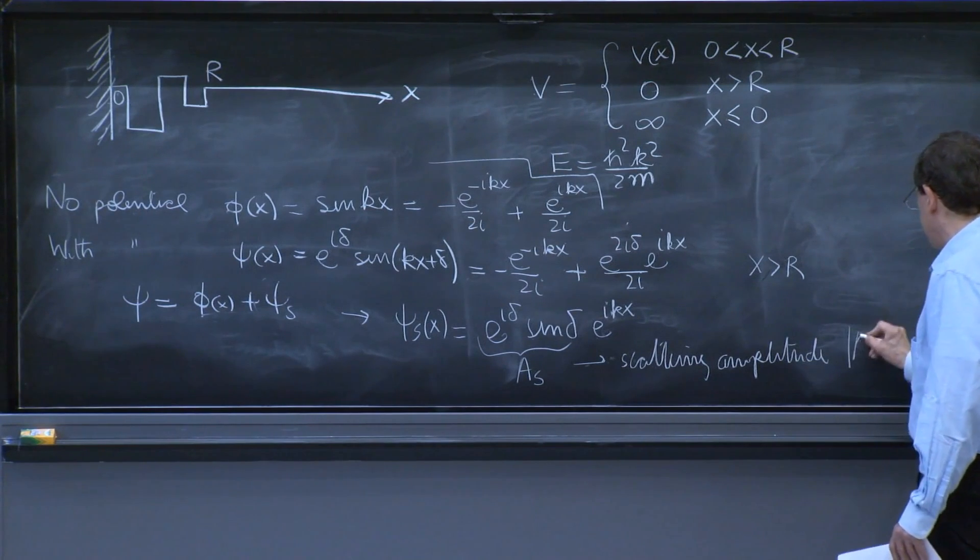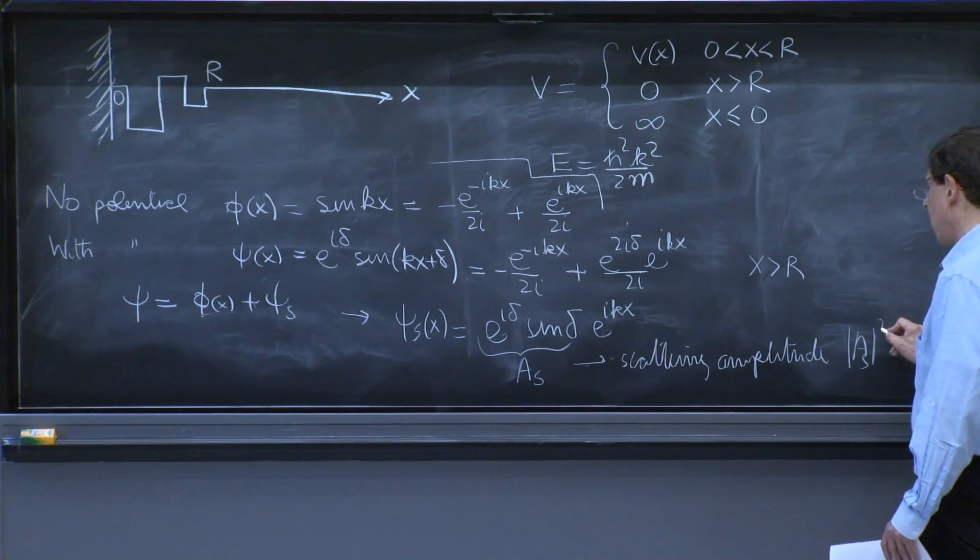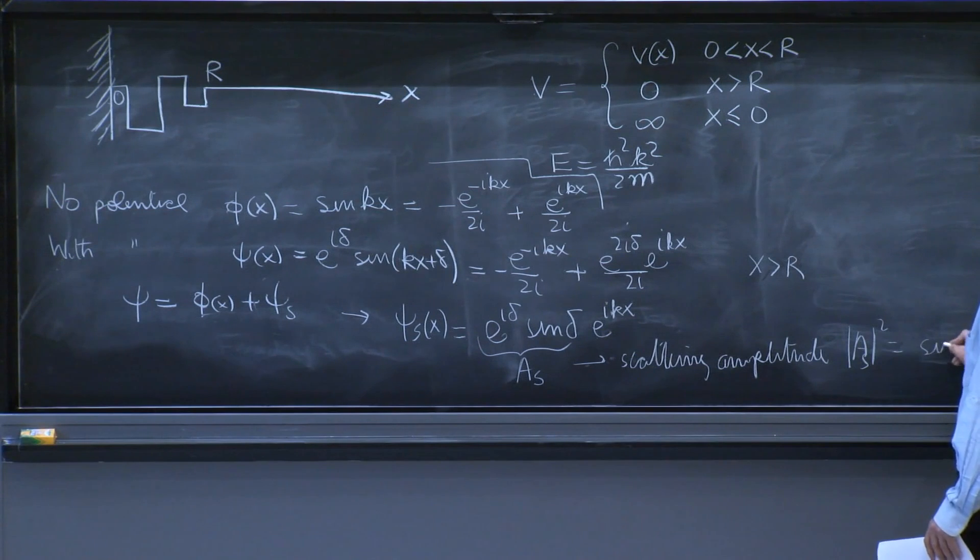And that represents an outgoing wave beyond what you get outgoing with a free, no potential wave function. So it's a scattering amplitude. And therefore, sometimes we're interested in A squared, which is just sine squared delta. Anyway, those are the things we did last time.